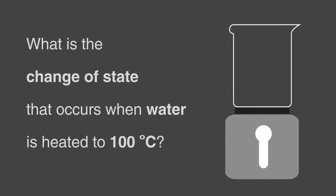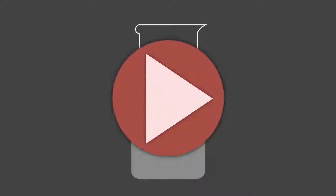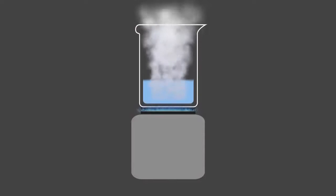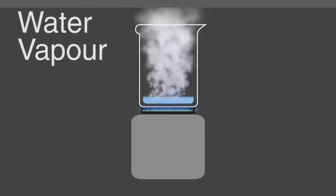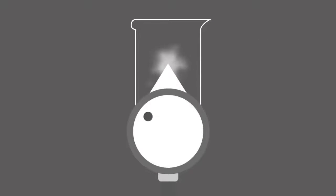What is the change of state that occurs when water is heated to 100 degrees Celsius? Pause, think, and continue when ready. The answer is, water evaporates from a liquid to a gas, in our case, water vapor. The particles in a gas are further away from one another and take the shape and volume of their container.